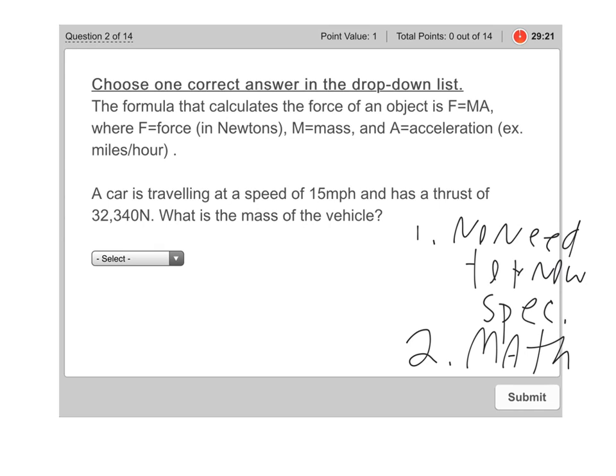So the first thing we want to do is identify what do we have here? What are the parts in this problem? So we definitely want to say acceleration is miles per hour, right, because we already know that acceleration is the speed, how fast you're going. So we're going to go ahead and plug that into the formula. When we do the formula here, F=MA, we're going to put in 15 for A.